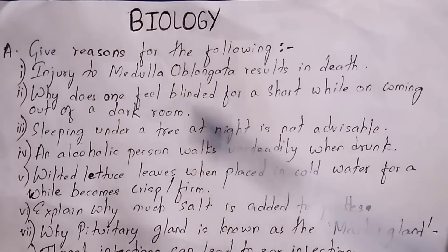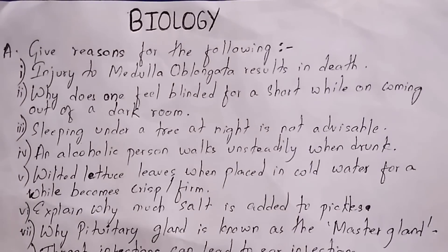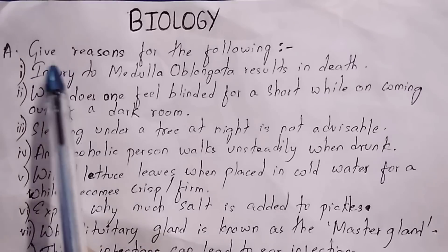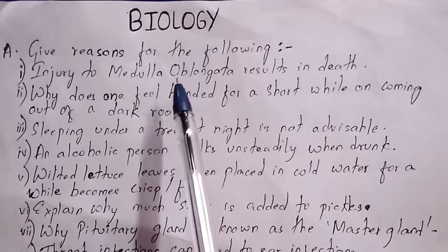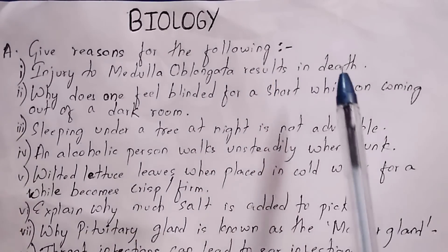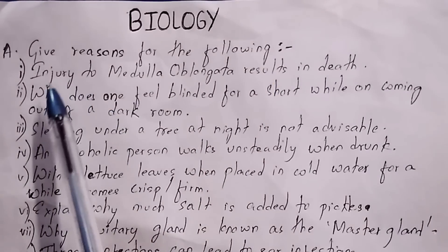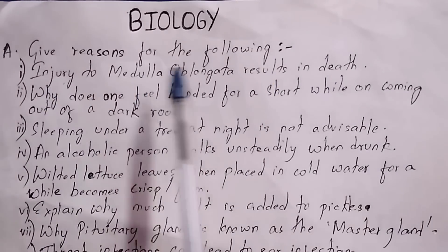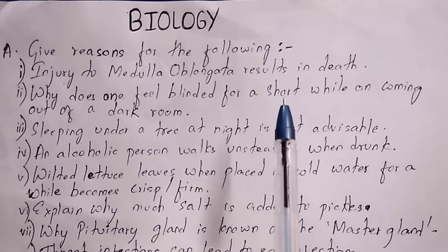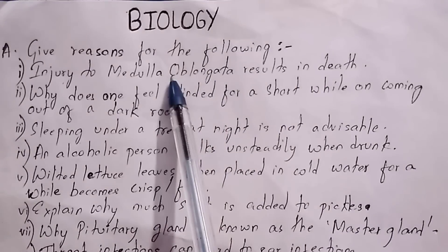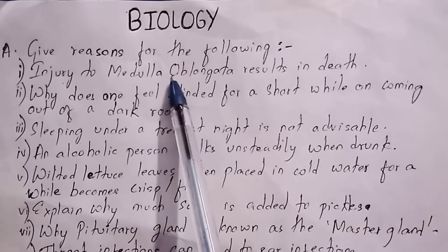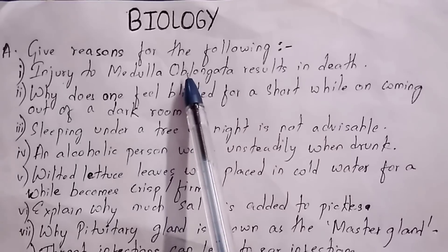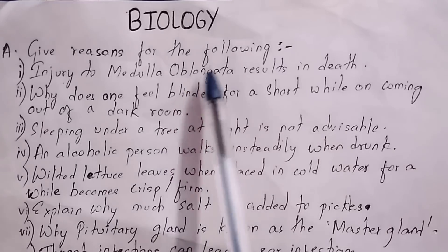There are 13 give-reason type questions. Question 1: Injury to the medulla oblongata results in death. This is because the medulla oblongata controls involuntary activities like respiration and heartbeats. Any injury to this part of the brain arrests these movements and causes death.